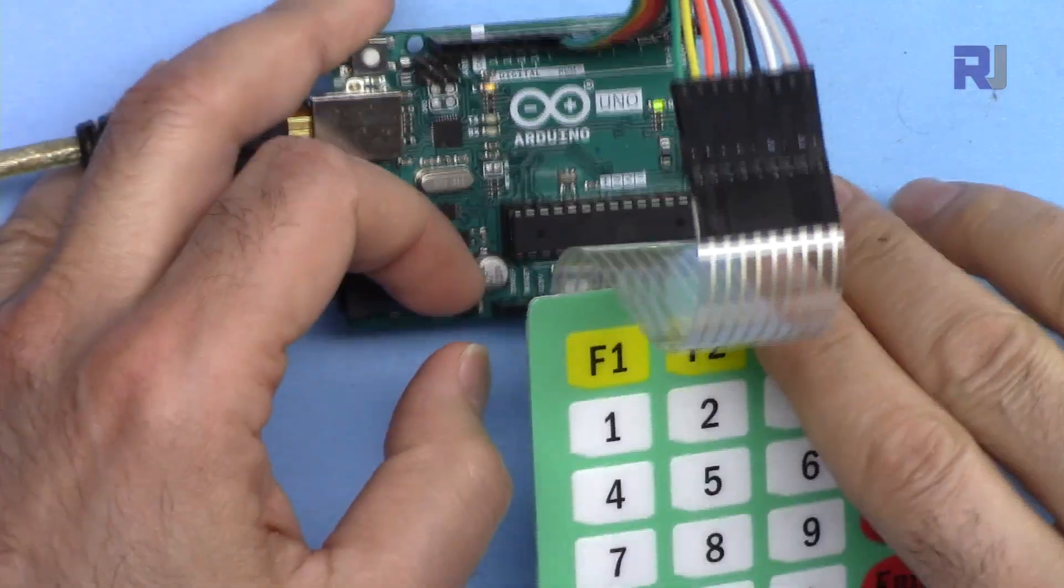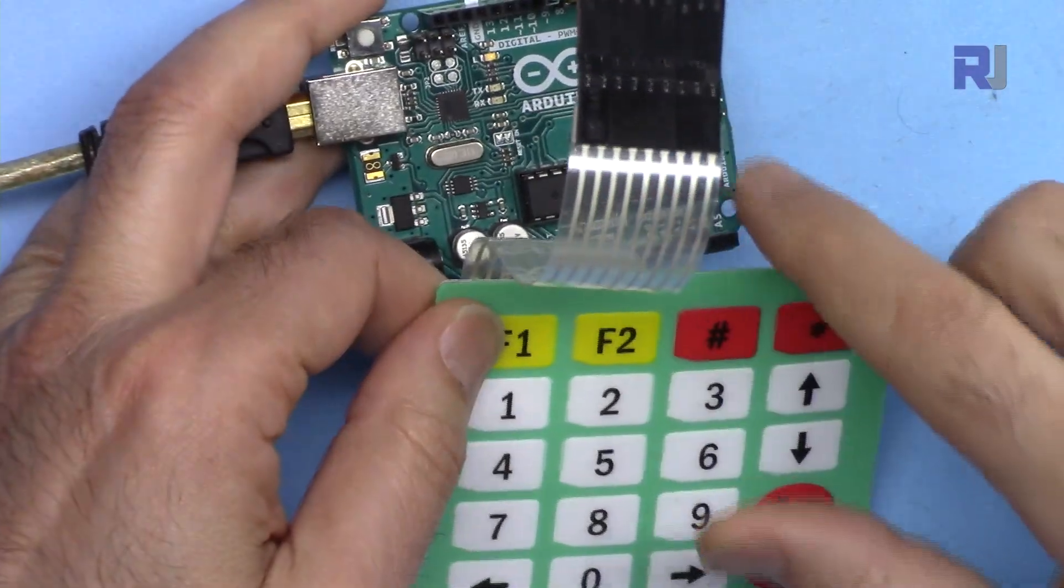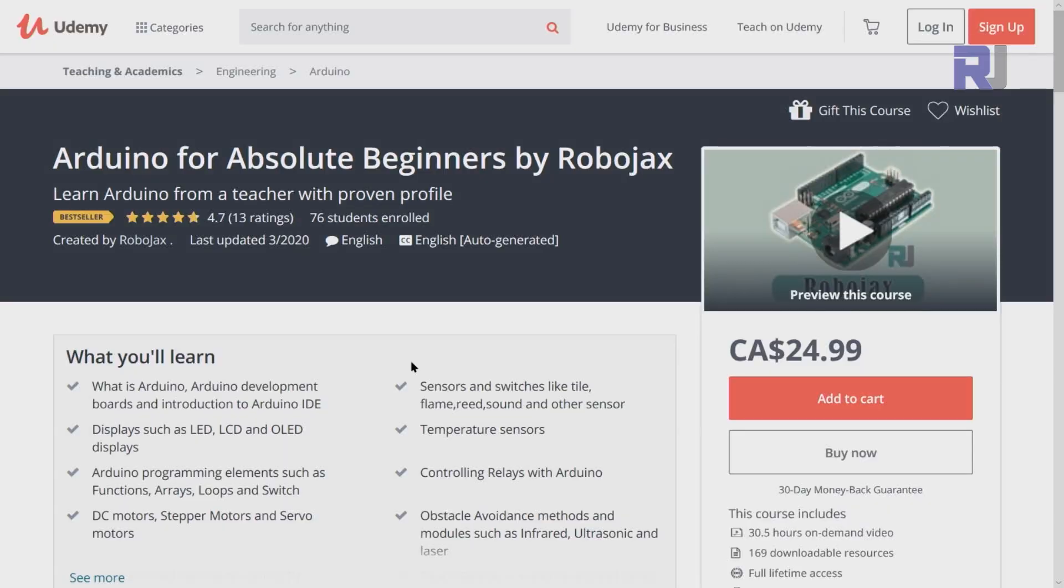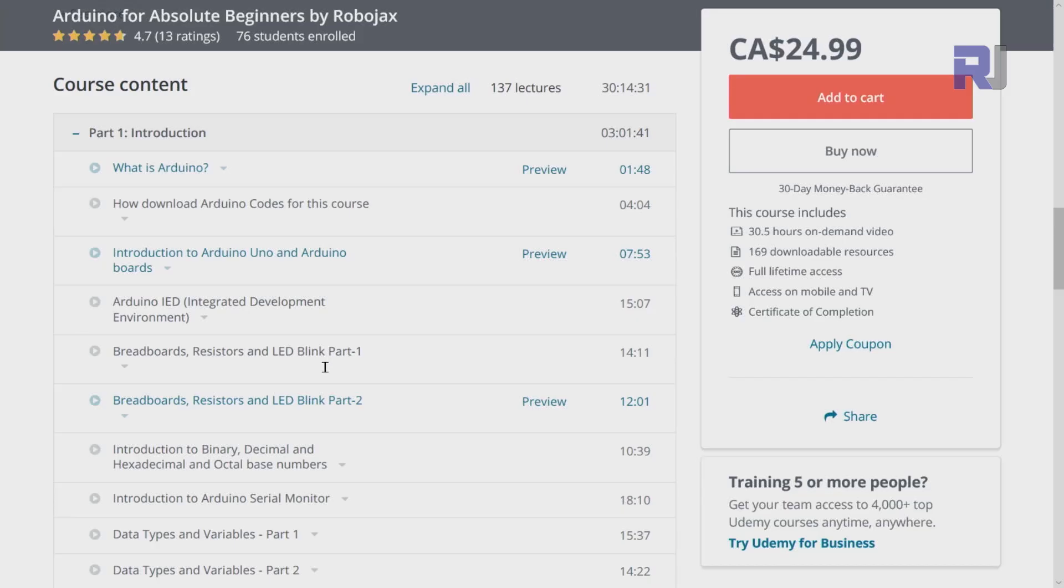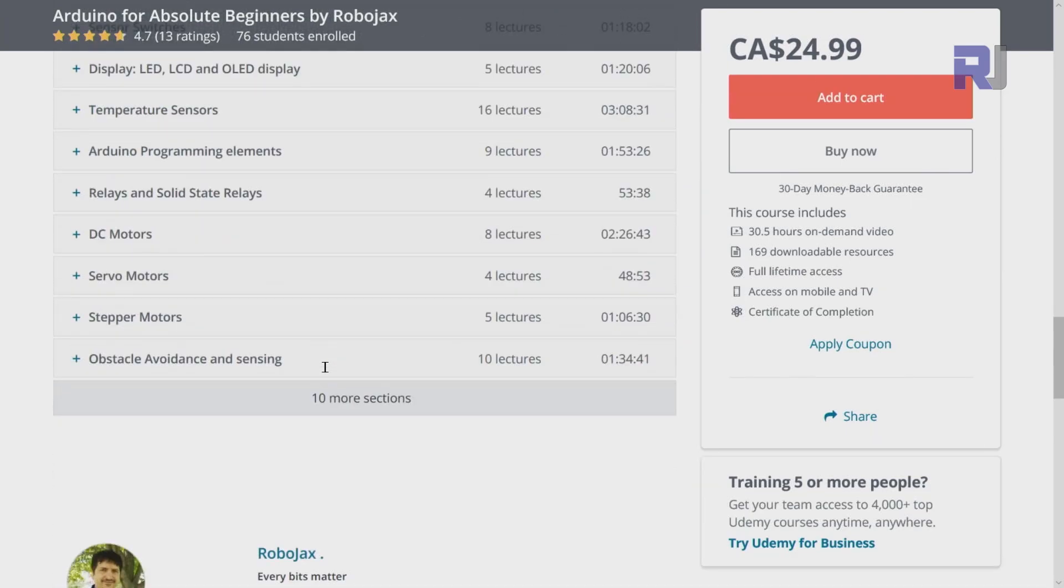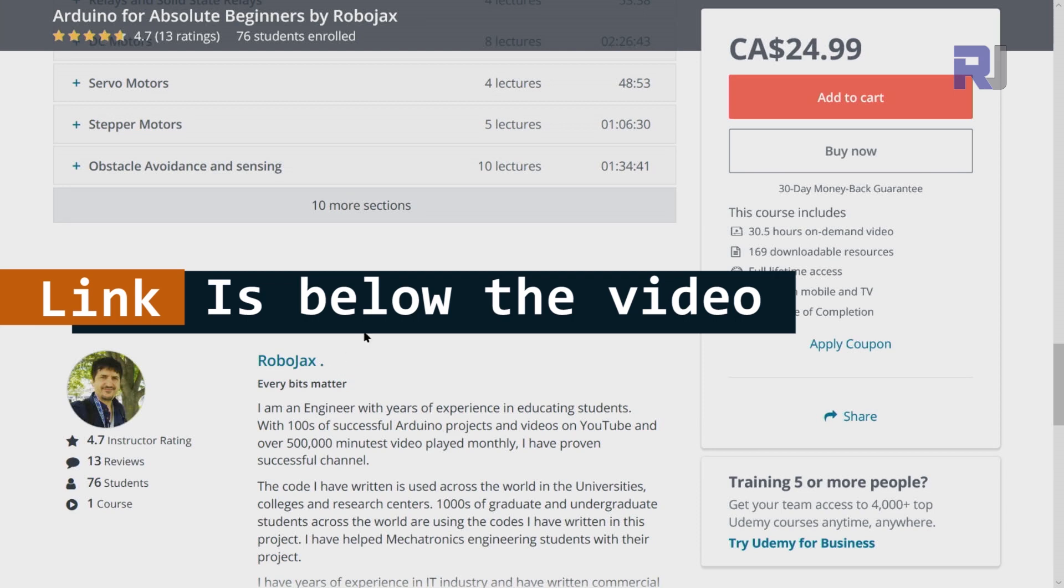If you need wiring diagrams for your project, it is available as part of my Arduino course at udemy.com. If you want to learn Arduino I have a bestseller course on Udemy where you can learn Arduino from the ground up with hundreds of projects. All course material, library codes, wiring diagrams, everything available in one place. The link for my Arduino course is below this video in the description.